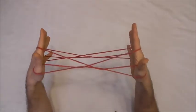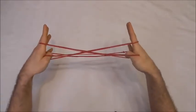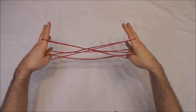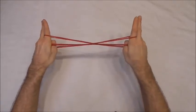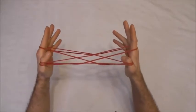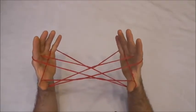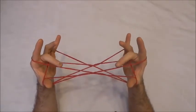Next I want to take my thumbs underneath the pointer finger loops, insert them into the little finger loops from below, and collect on the back of my thumbs the near little finger string, pulling them underneath the pointer finger loops.